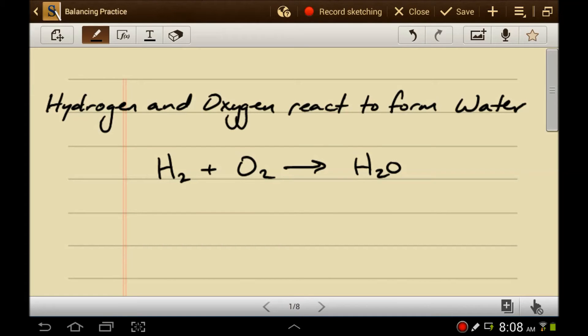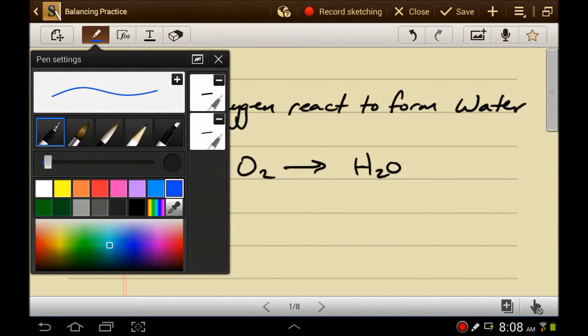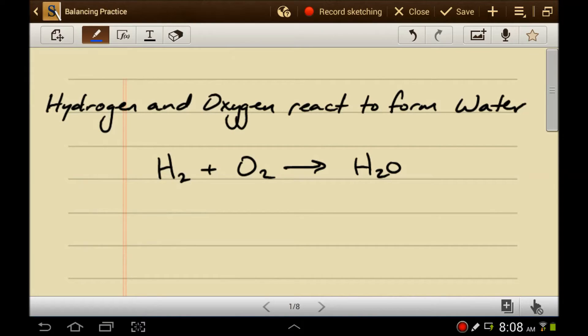You cannot balance a reaction with a subscript. So if we want to balance this, we know we've got two hydrogens over here, and we know we've got two hydrogens over there. So that obeys the law of conservation of matter. That's great! We've got two oxygens here, and we've got one oxygen there.